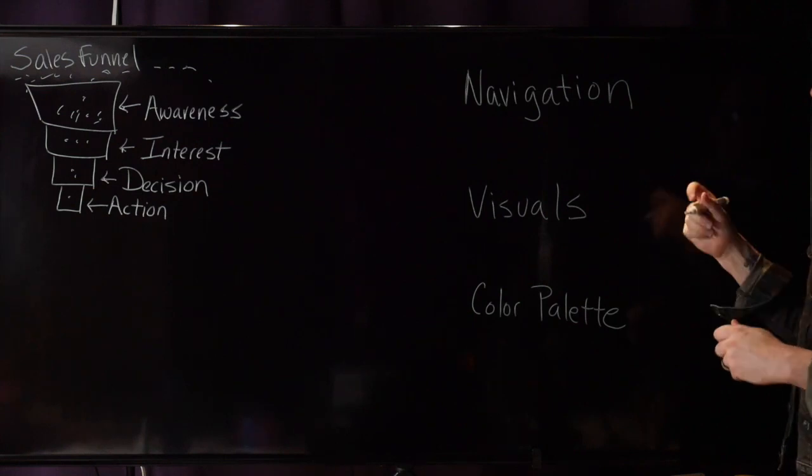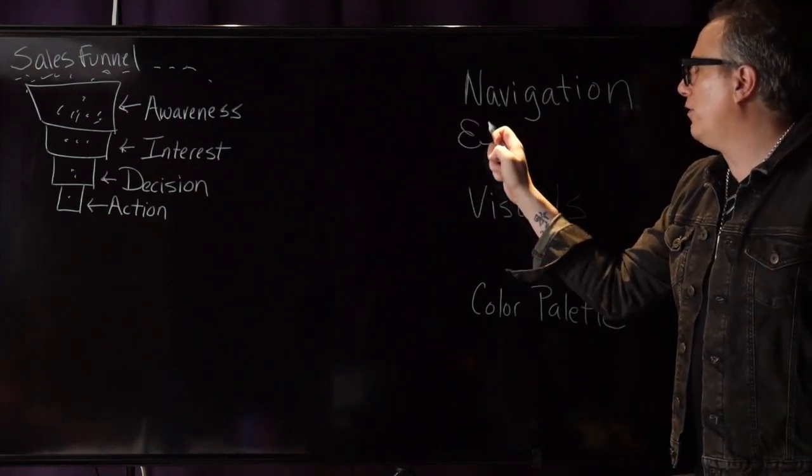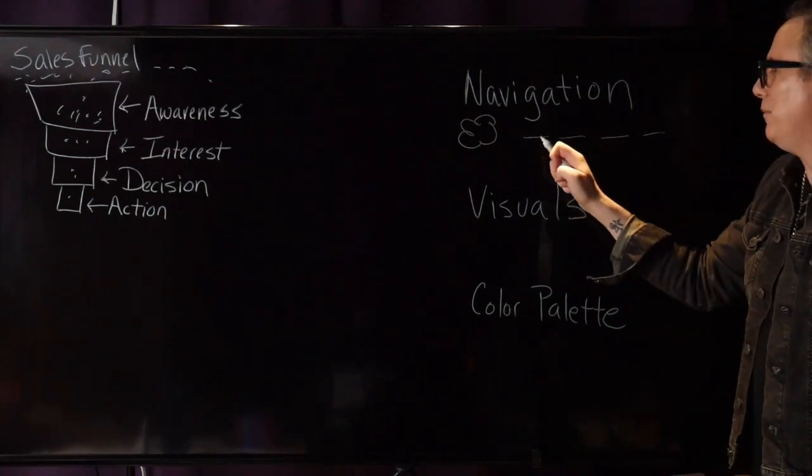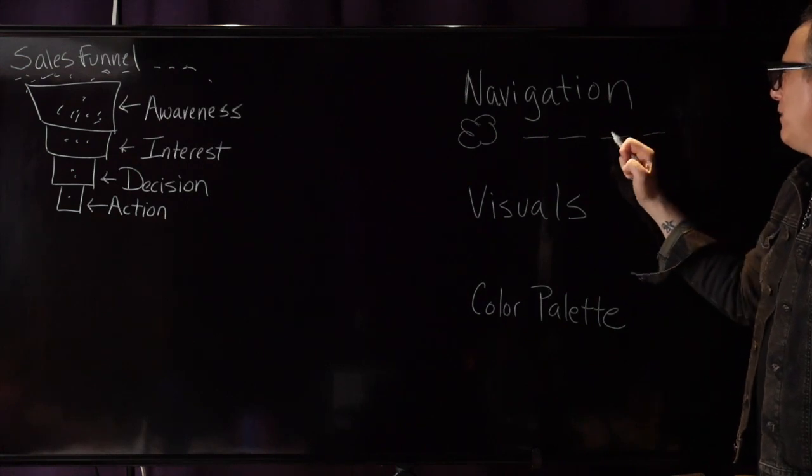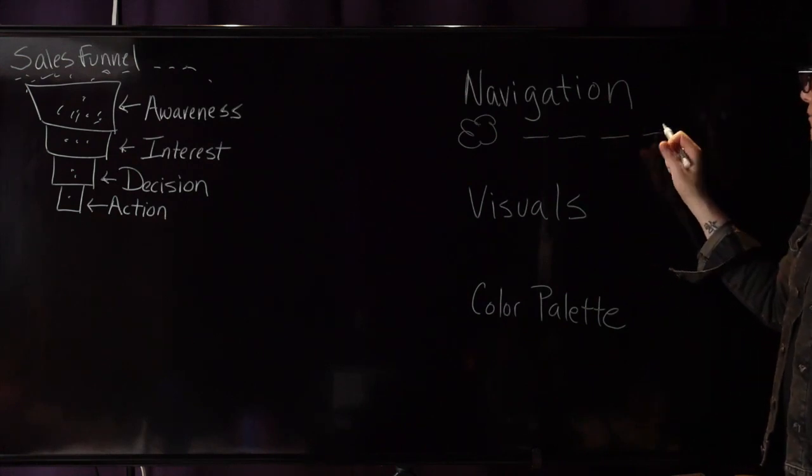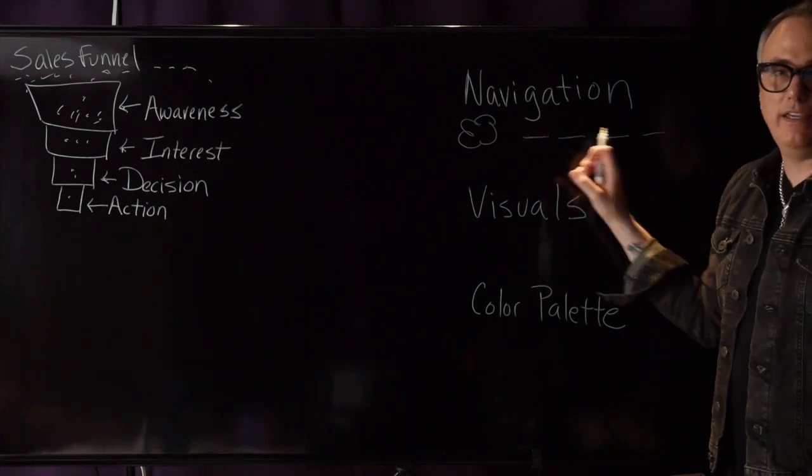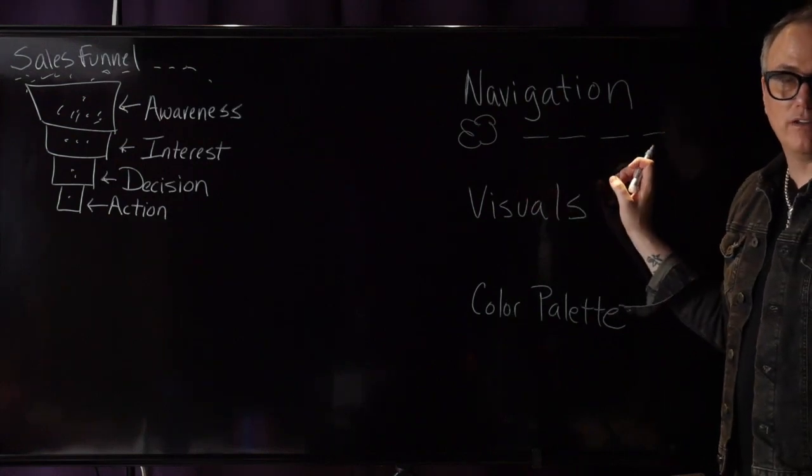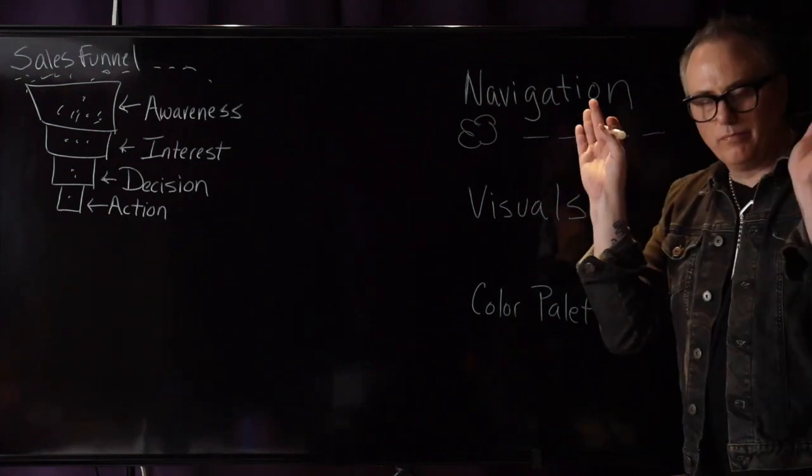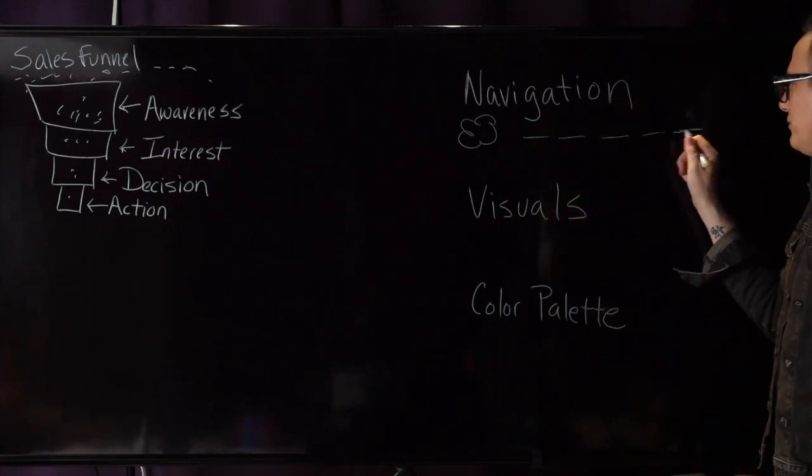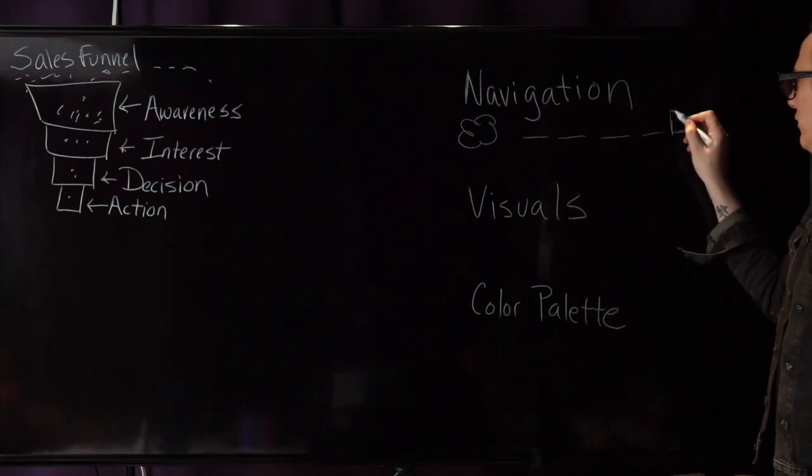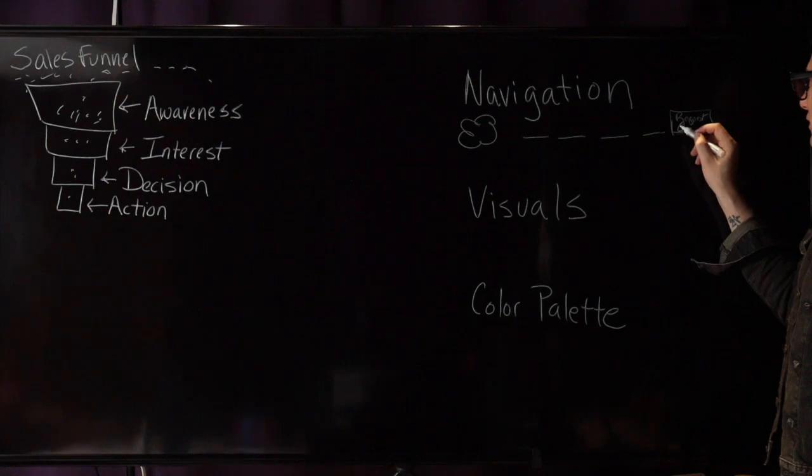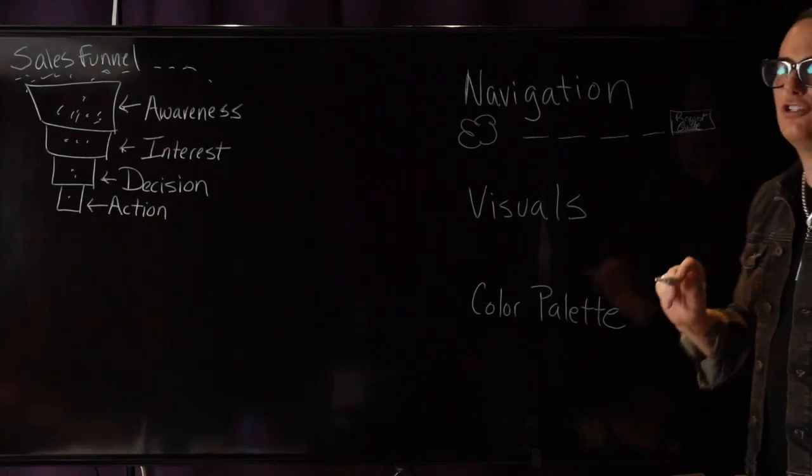First, always start with the navigation. Is your site very easy to navigate? You might have your logo in the upper left and then your menu items - maybe about me, services I provide, my blog, and contact me. Now the rule here is don't have more than five menu items. More than five is too many, the brain can't handle it.